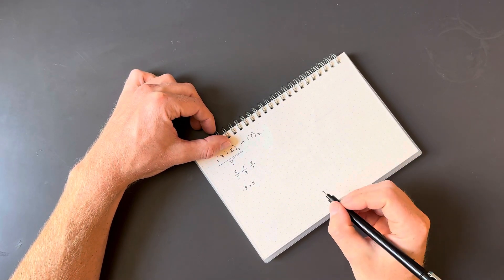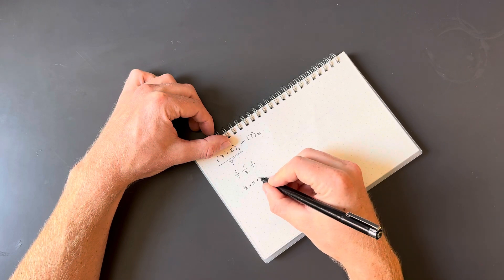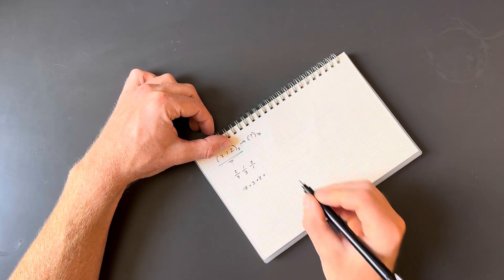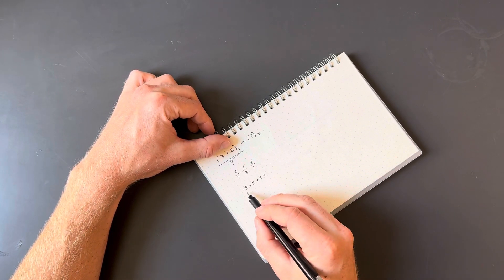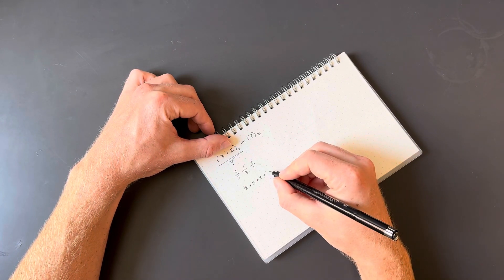And then we have a 2 in the ones place, so we're gonna add 2 more. So our total quantity being represented here is gonna be 18 plus 3 plus 2, or 23.